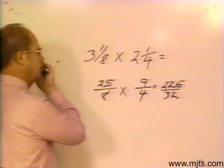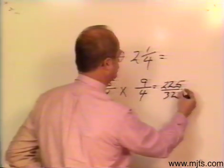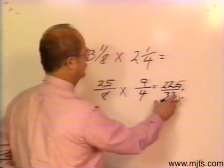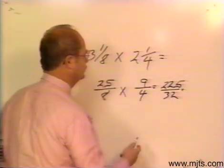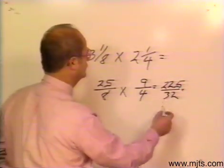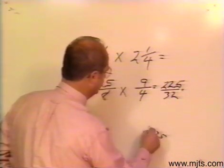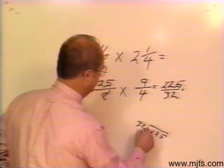Anybody with a calculator? Now what I would want to do is take this value, take my 32 into my 225, and I would have 225 divided by 32.